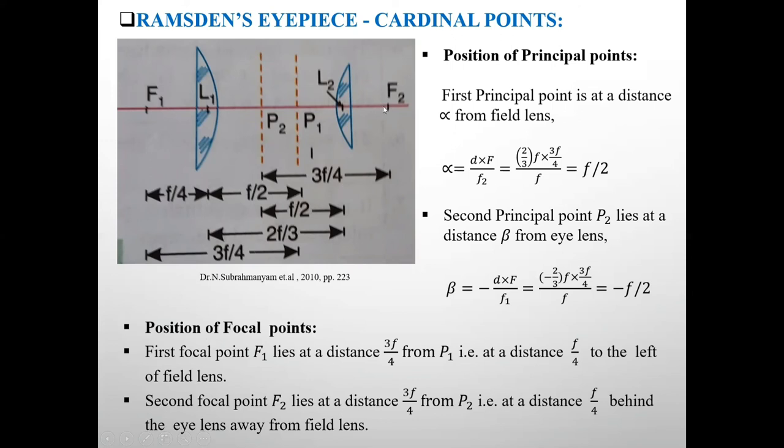The second focal point F2 lies at a distance of 3F by 4 from second principal point P2, this distance. That is at a distance F by 4 behind the eye lens away from the field lens.